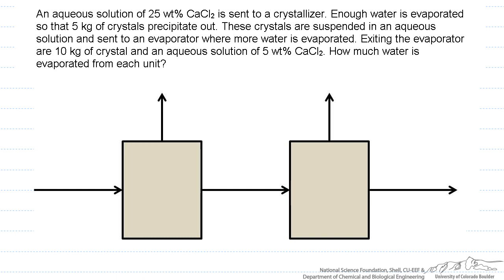So let's start here in the beginning. We have aqueous solution that is 25 percent, or 0.25 calcium chloride, and because it's aqueous, that means the rest of this is water. Enough water is evaporated so that five kilograms of crystals precipitate out.